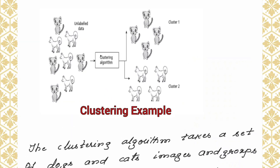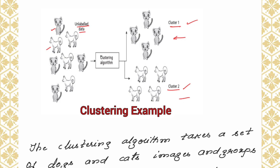This diagram may help you in understanding the clustering mechanism. You are giving the unlabeled data — here you can see pictures of cats and dogs. The algorithm gets trained with all the features of the images that are fed to it. It observes all the features of each data point and groups them into clusters. Since we have two different types of objects, all images of cats are put in cluster 1 and all images of dogs are put in cluster 2.